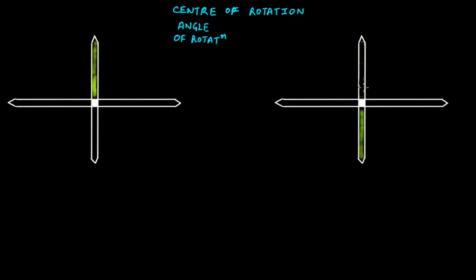45, 45, 45, and 45 — so again at an angle of rotation of 180 degrees, these two figures are again symmetrical. So we say this is rotational symmetry. This is showing us the rotational symmetry.